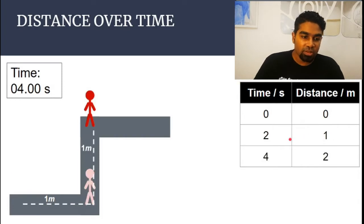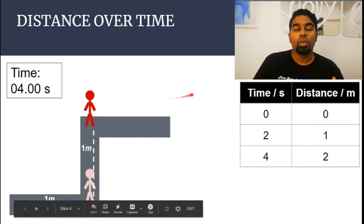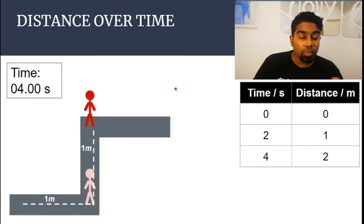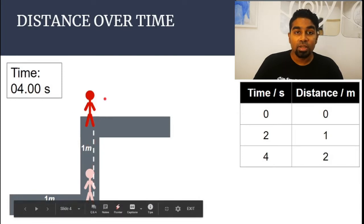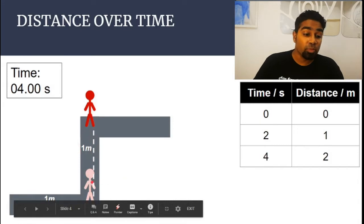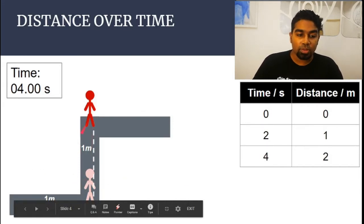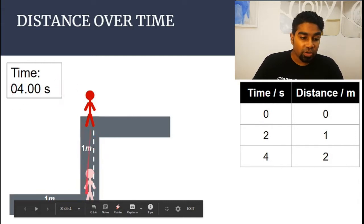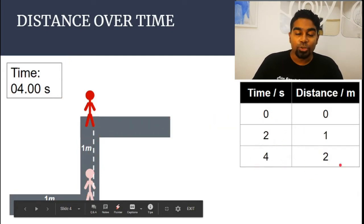Now at four seconds, Mr. Red goes up. Remember that distance is a scalar quantity — it does not have direction. It does not matter in which direction Mr. Red moves; we still record the distance that he travels. It doesn't matter whether he moves up, right, or even left — we only care about the distance traveled. So in the fourth second he has traveled a total of two meters, and at four seconds we record two meters.